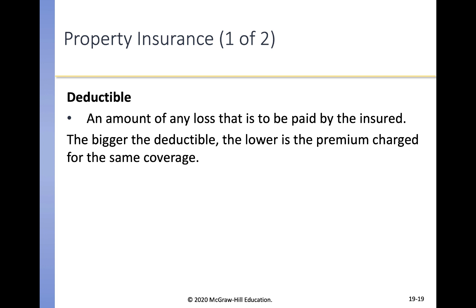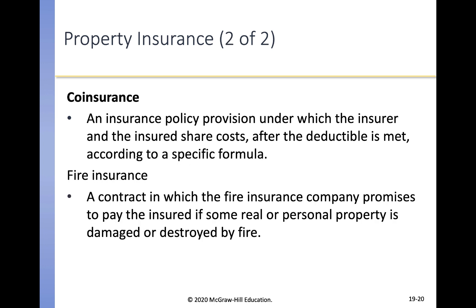Moving on to property insurance. Common property insurance policies have a deductible — an amount of any loss to be paid by the insured before the insurance company starts making payments. The bigger the deductible, the lower the premium charge for the same coverage. Co-insurance is another common provision — it's an insurance policy provision under which the insurer and insured share costs after the deductible is met according to a specific formula. Fire insurance covers real or personal property damaged or destroyed by fire.